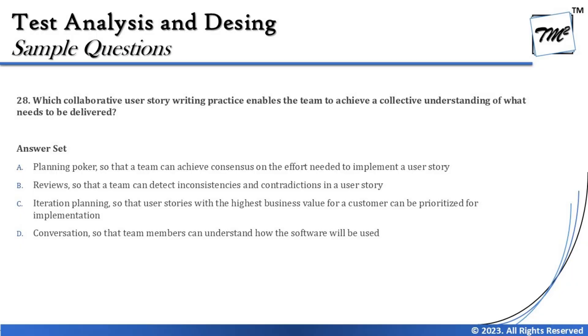Question 28 asks: which collaborative user story writing practice enables the team to achieve a collective understanding of what needs to be delivered? This is a user story activity question. Recall the three C's from collaborative user story writing: Card, Conversation, and Confirmation. The Card is dedicated to each story; Conversation is a discussion where people ask questions and understand what needs to be implemented; Confirmation covers acceptance criteria to determine key criteria for meeting goals.